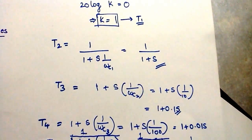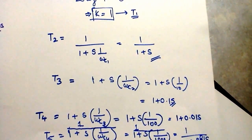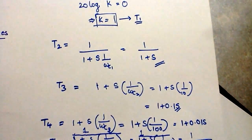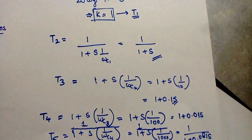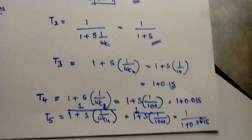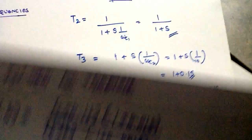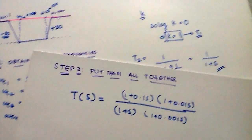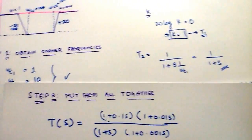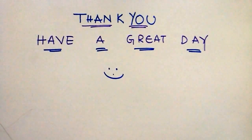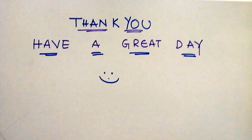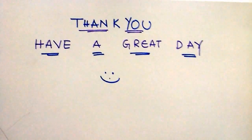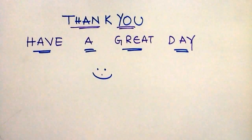That is how you find the transfer function from a given Bode plot: Step 1 — obtain corner frequencies; Step 2 — identify the terms and the constant; Step 3 — put them all together. Hope you found this video useful. Thank you for watching and have a lovely day.